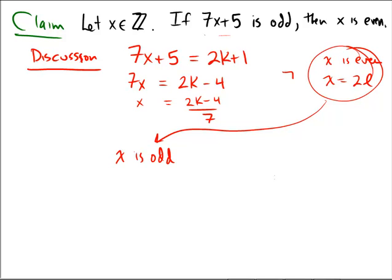So if x were actually odd, that would mean that x would be equal to 2k plus 1. And then we can more easily work with the beginning expression of 7x plus 5. We'd have that 7x plus 5 would be equal to 7 times 2k plus 1, which would be equal to 14k plus 7.